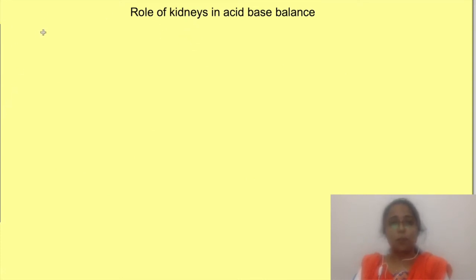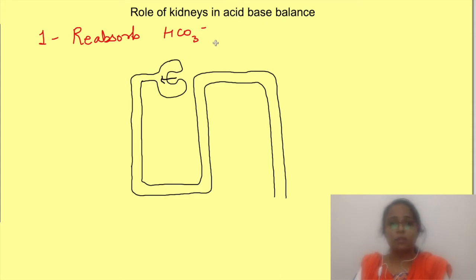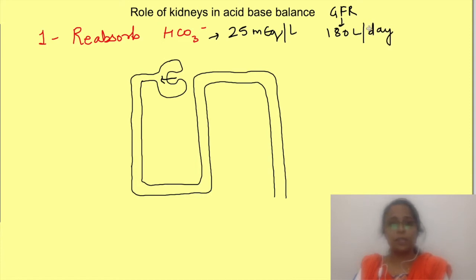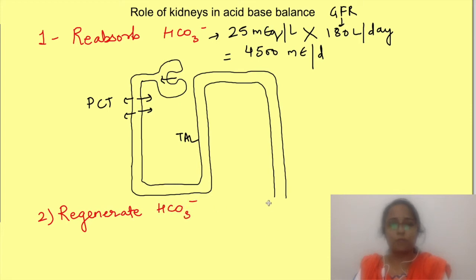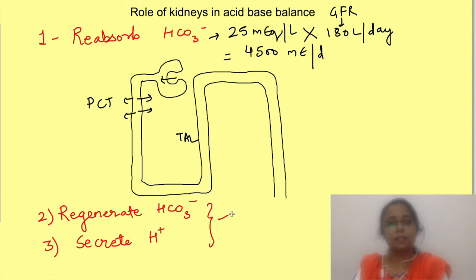The kidneys do three things. First, they reabsorb filtered bicarbonate — preventing its loss. Bicarbonate is freely filtered through the glomerulus; with a plasma concentration of 25 milliequivalents per litre and a GFR of 180 litres per day, 4500 milliequivalents of bicarbonate are filtered per day and must be reabsorbed. Kidneys absorb this mainly in the proximal tubule and thick ascending limb of the loop of Henle, with the remainder in the distal tubule and collecting duct. Second, kidneys regenerate bicarbonate. Third, kidneys excrete hydrogen ions — the second and third functions go hand in hand and occur in intercalated cells of the collecting duct.